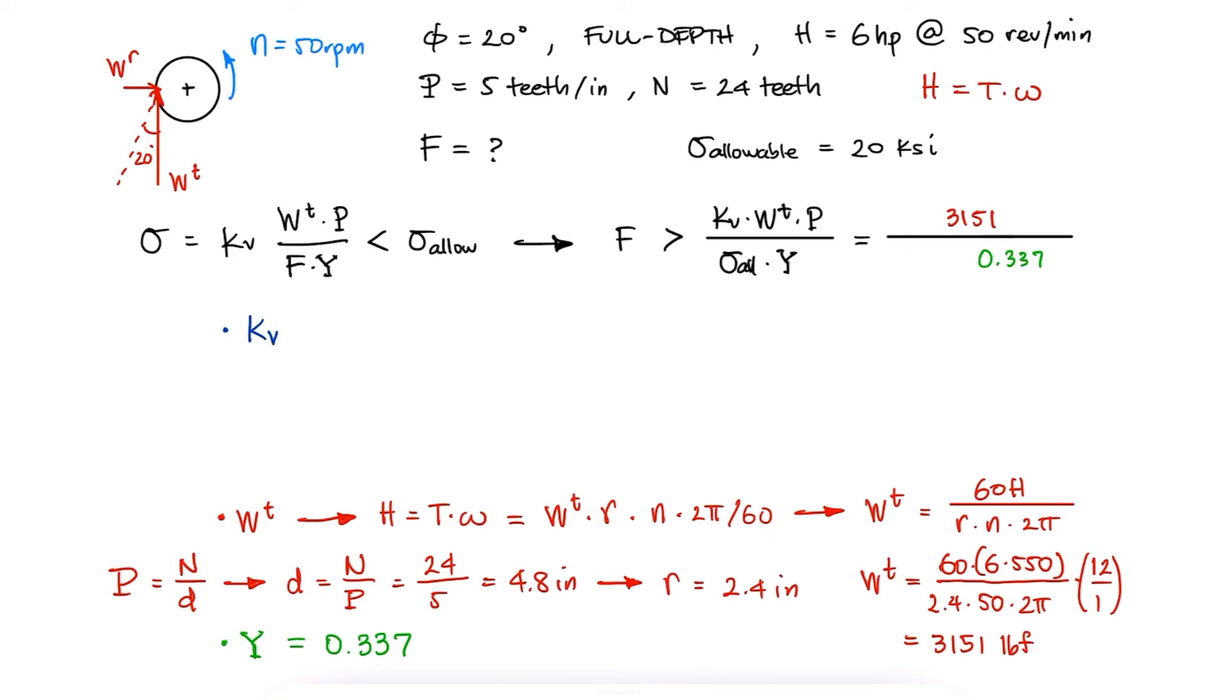The velocity factor for cut or milled teeth in English units depends on the pitch line velocity in feet per minute. This tangential velocity, which is the angular velocity times the radius, is equal to 62.83 feet per minute when correcting for units.